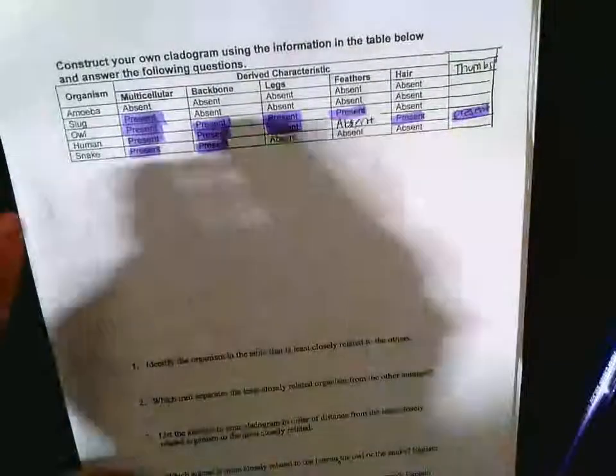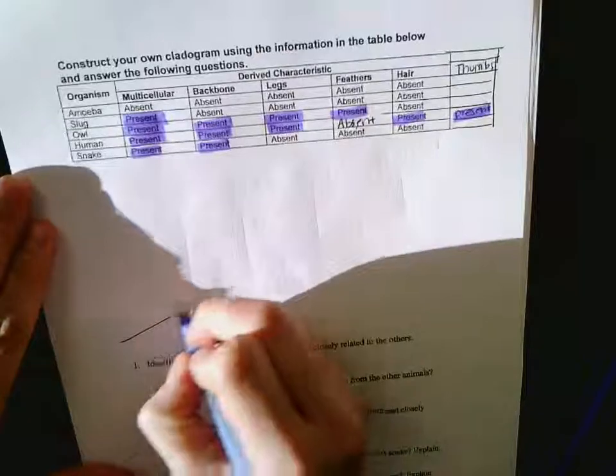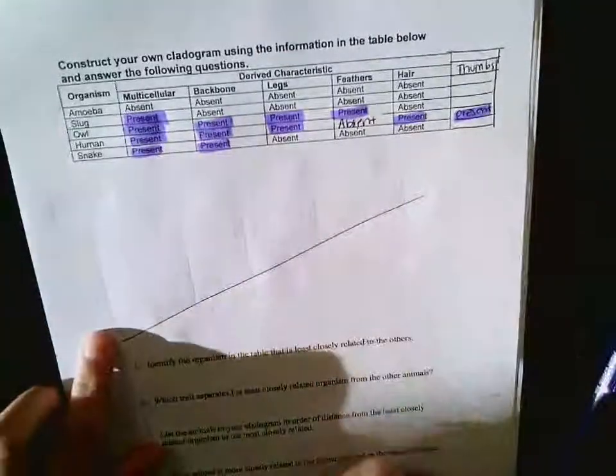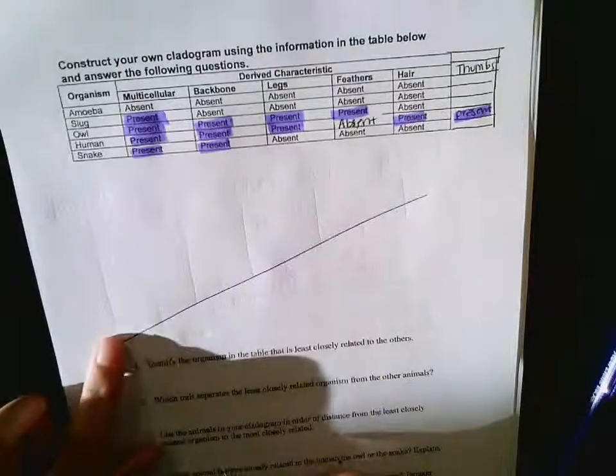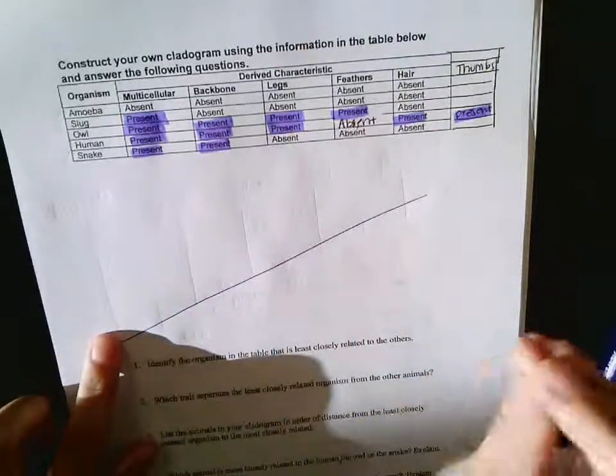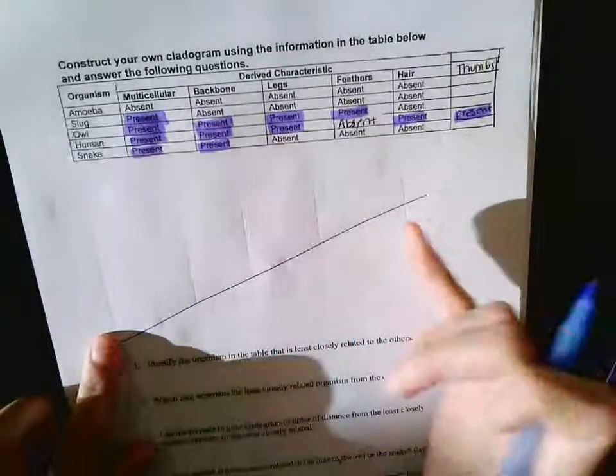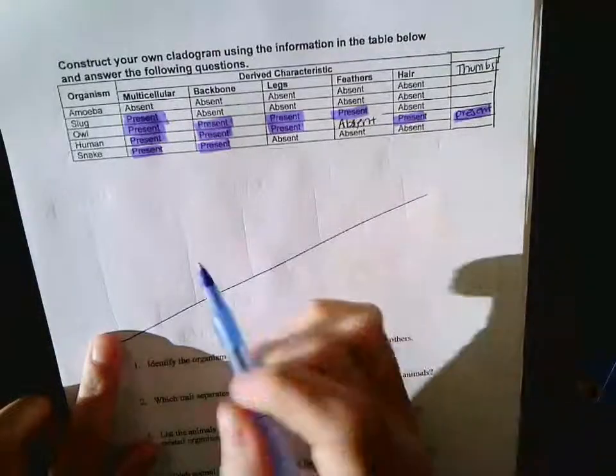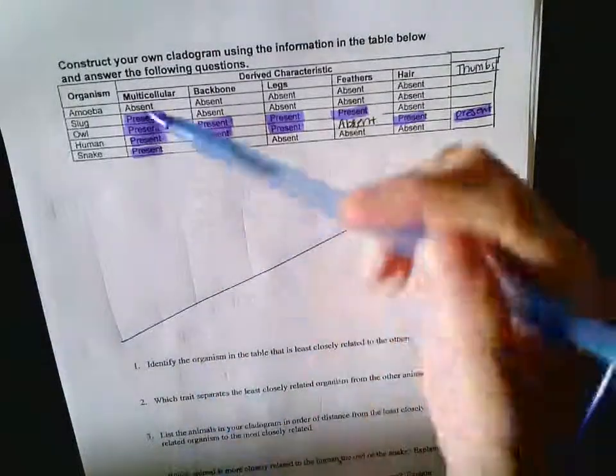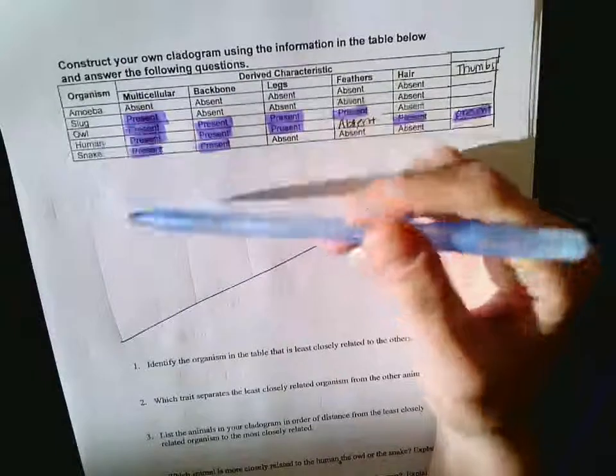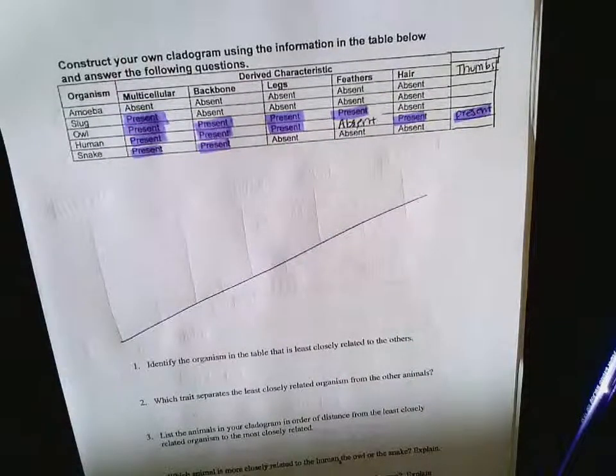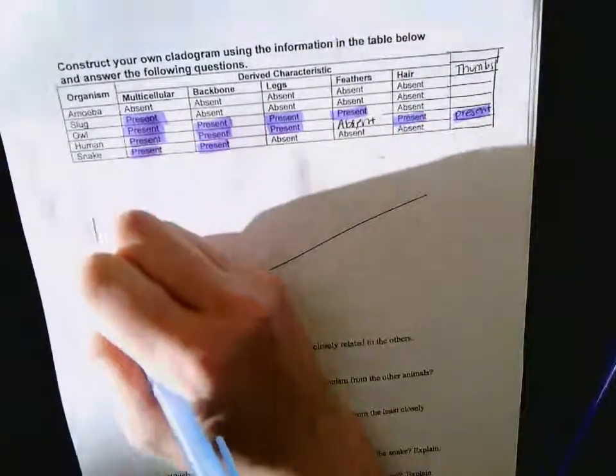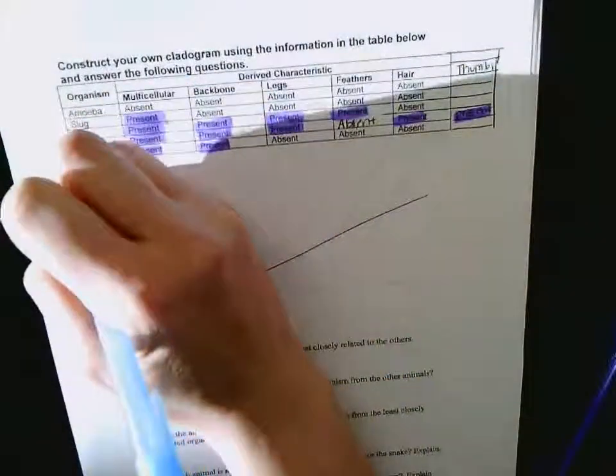Now the next thing you're going to do is you are going to draw a line. Down here is the most simplistic or basic, the one that is the common ancestor of the ones that are going after it. Here is the most complex based on these traits. So these organisms are not in order. Which one has the fewest things present? The amoeba. So at the bottom you're going to draw a line and you are going to write amoeba.